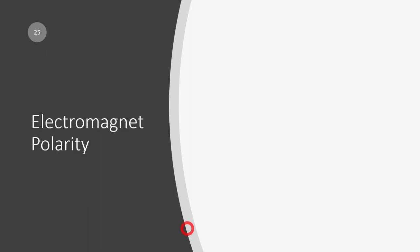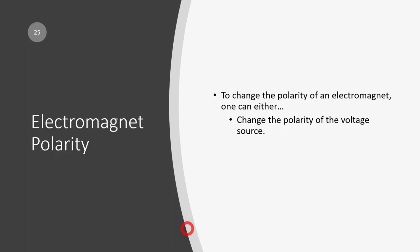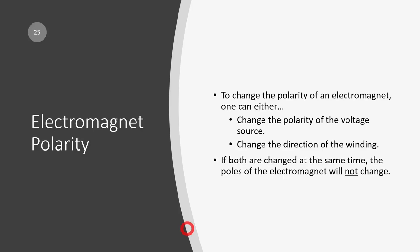Let's talk about polarity of the magnet. To change the polarity, here are some things you can do: you can change the polarity of your voltage source, or you can change the direction of the winding. If both are changed at the same time, you're changing two things at once and it will actually not have any effect. So you need to make only one change - either the polarity or the winding. In the case of an electric motor, you can't easily change the winding, so we're going to be always changing the polarity.